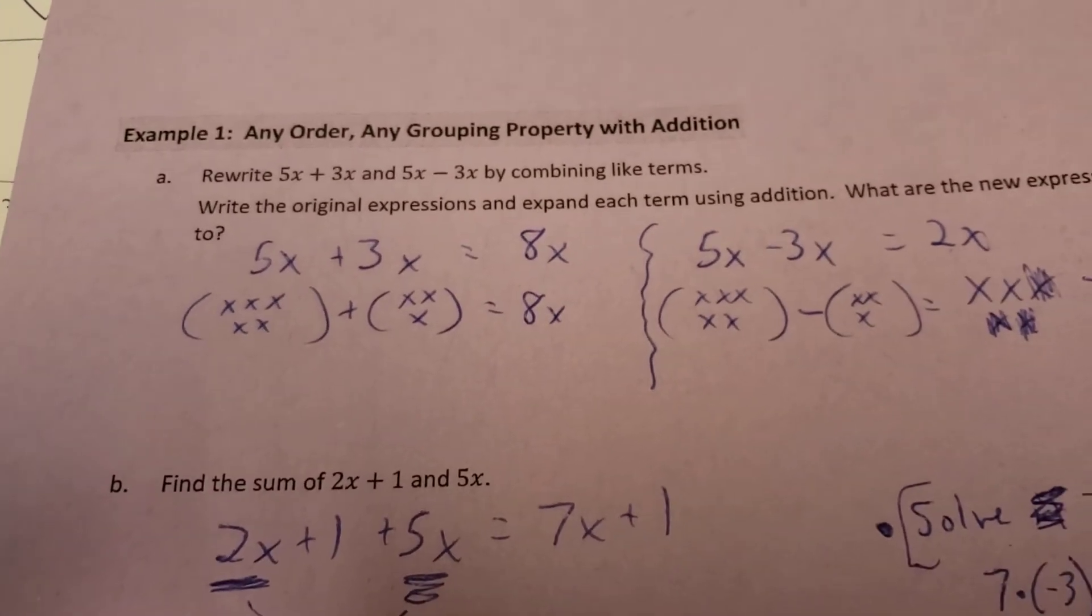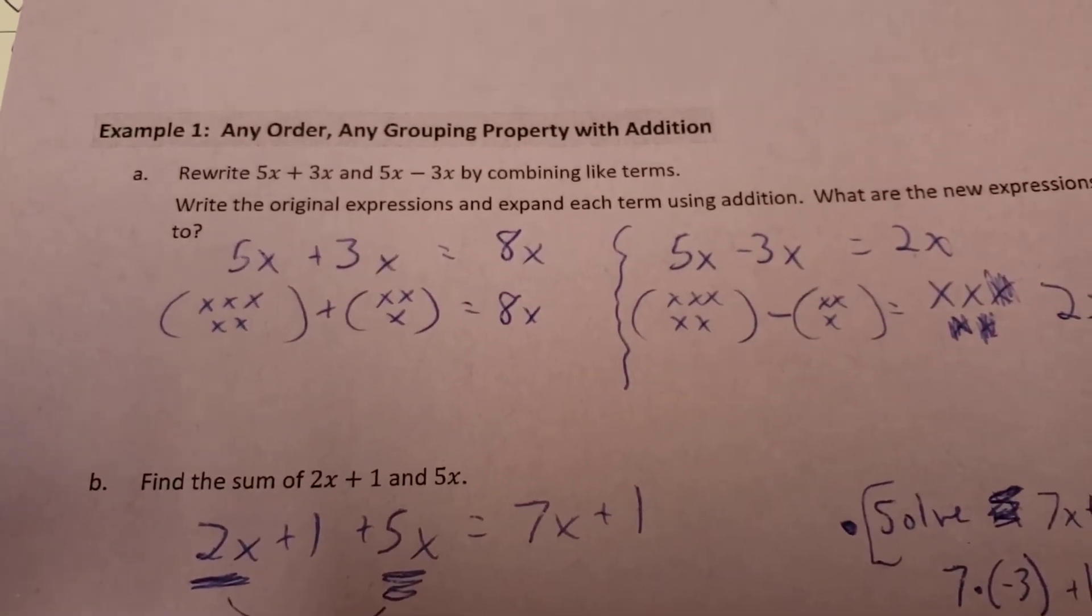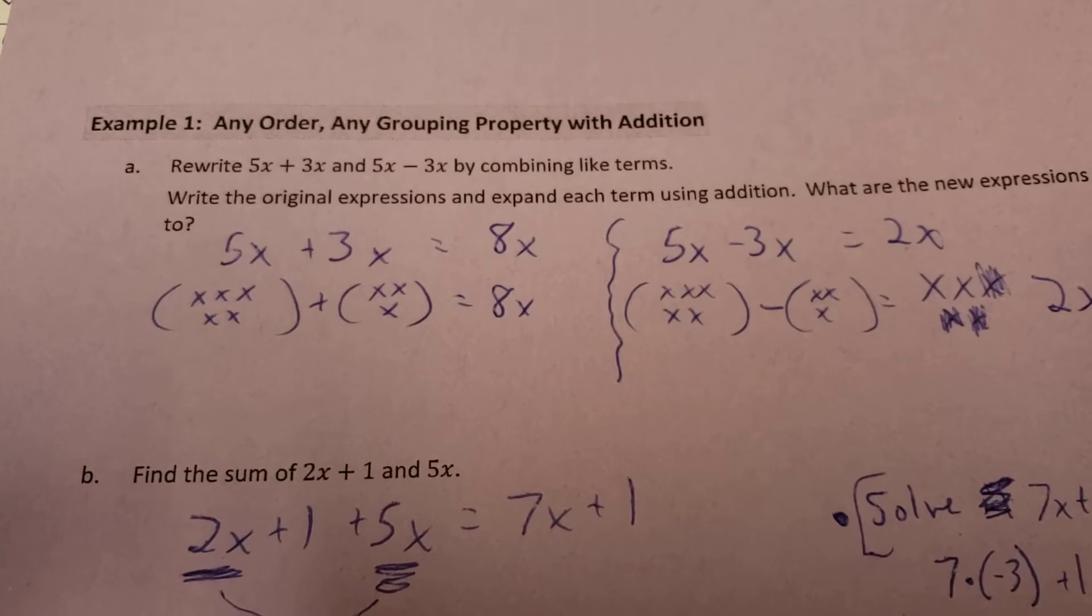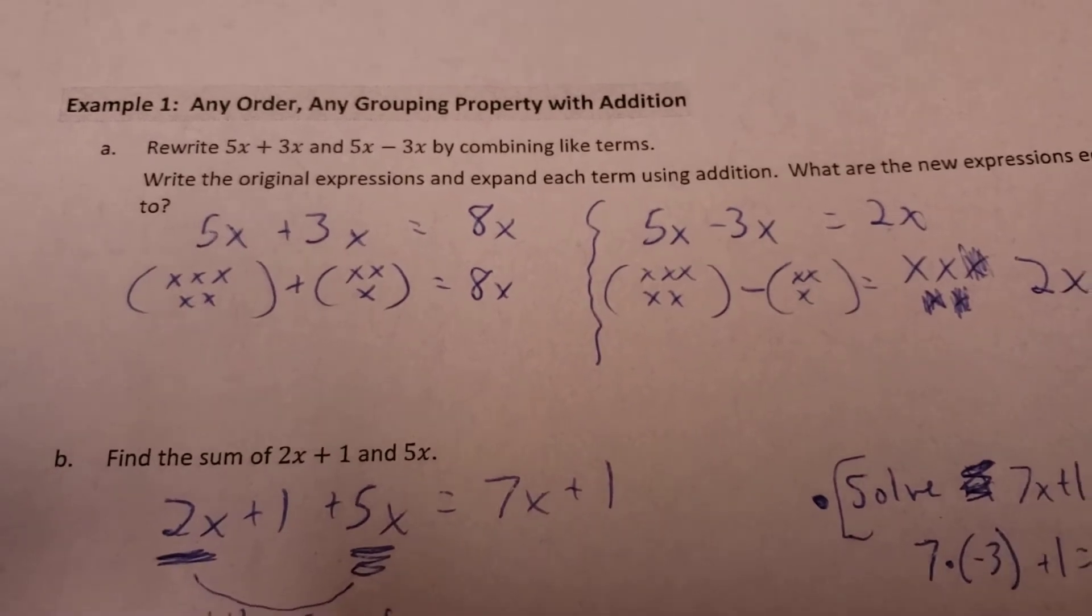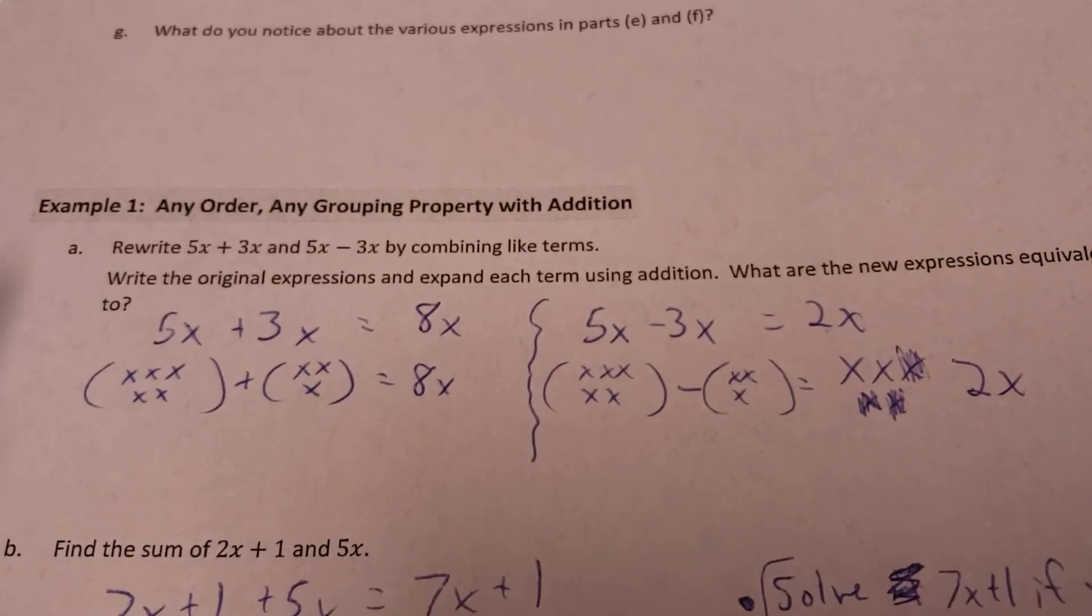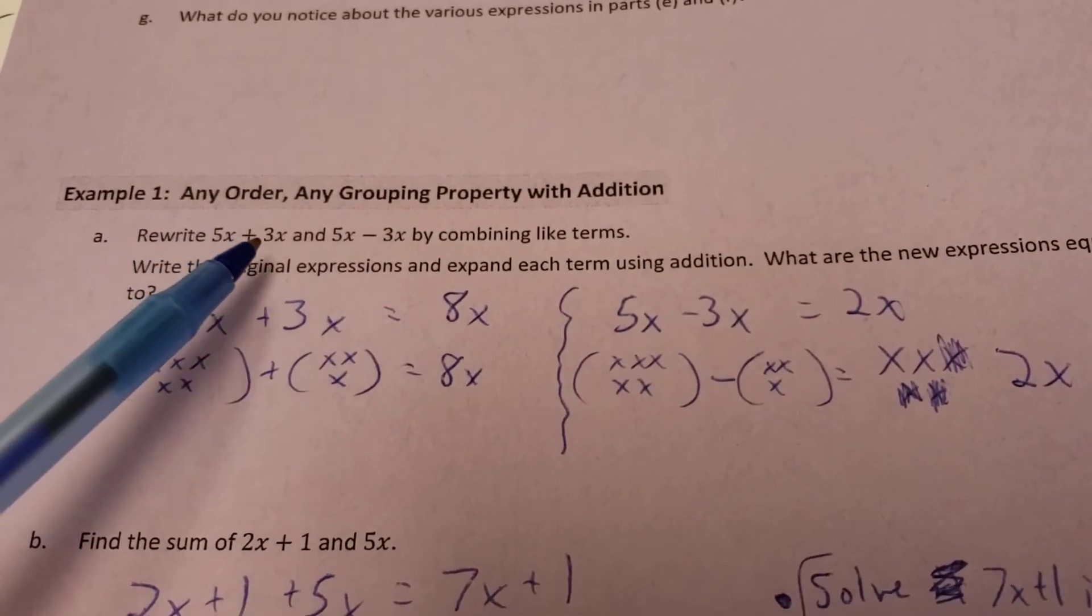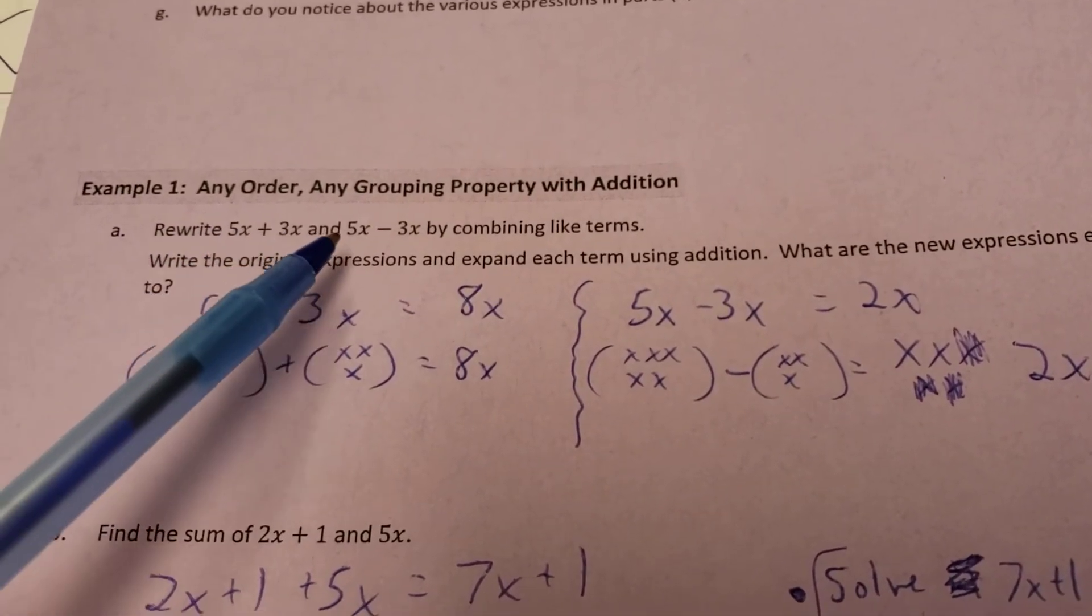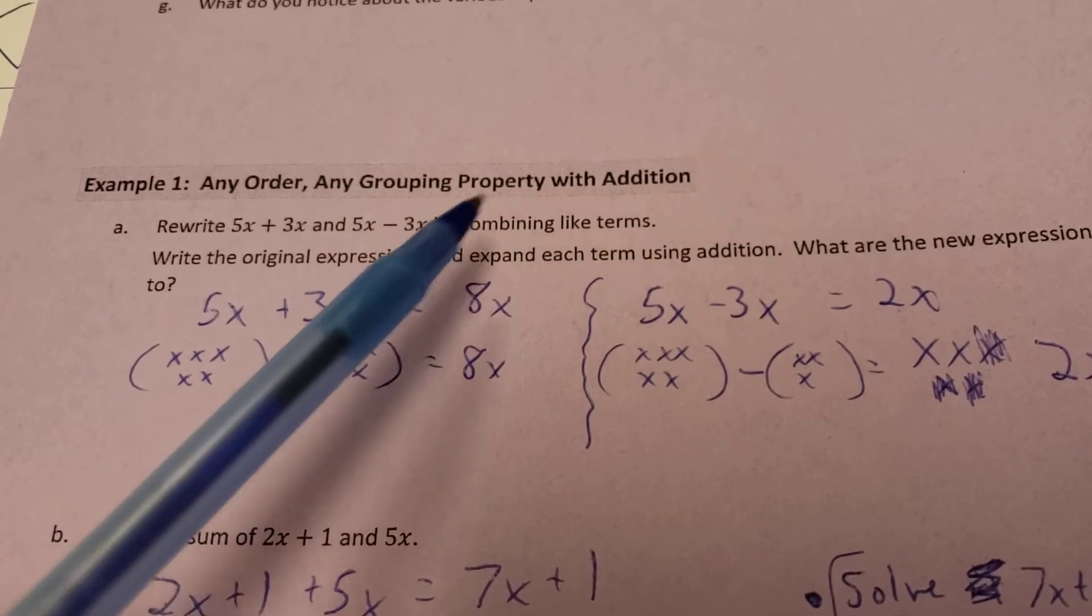Alright, so you can see we have a different color here today. We've got some purple. We're working with Lesson 1, Generating Equivalent Expressions. We're actually going to be over onto page 2 for our first examples here. What they want us to do is rewrite 5x plus 3x and then 5x minus 3x by combining like terms.